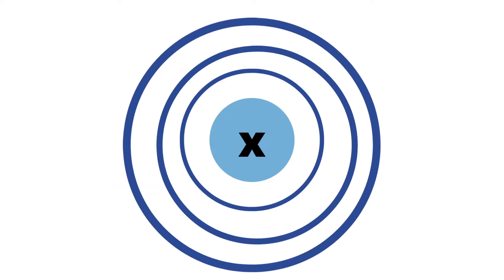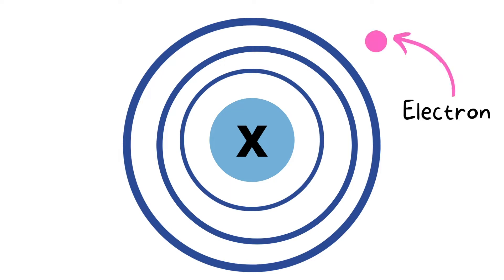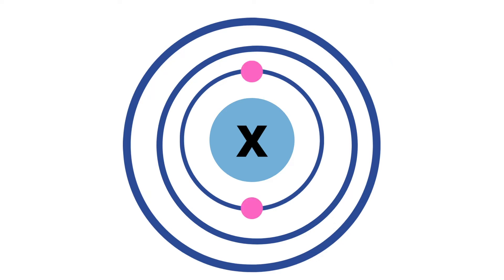Here we have three rings, so we would say that this atom has three energy levels. We also have electrons. These electrons hang out around these energy levels. We always fill these energy levels starting with the innermost, then working our way out towards the outermost. So we fill up the innermost and then we go on to the next shell.